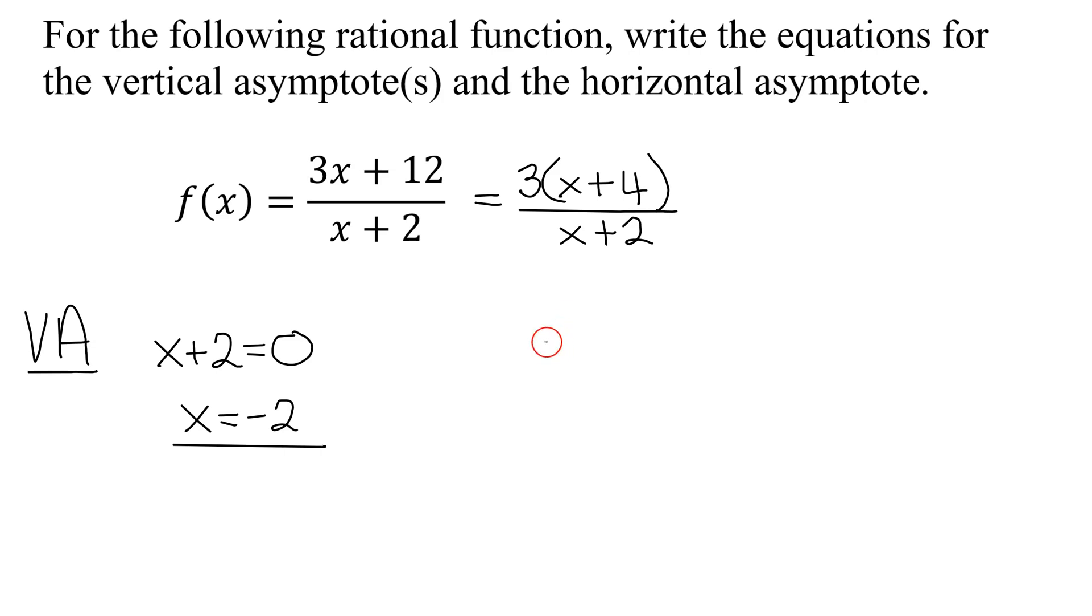Now we need to work on horizontal asymptotes. The horizontal asymptotes depend on the degree of the numerator. If I look at my numerator, what is the degree? What is the highest exponent on any of the x's? It's a 1. And how about the denominator? What is the degree of the denominator? The degree of the denominator is also a 1.